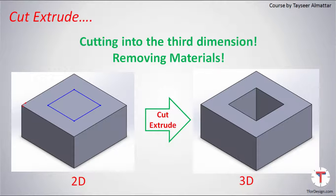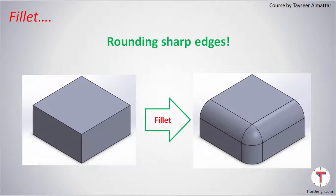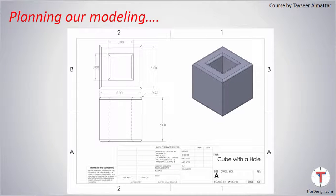Cut Extrude is the opposite of Extrude Boss — here we are cutting into the third dimension by removing material. Using Cut Extrude we can go from the 2D sketch on the left to that hole you see on the right. Fillets are basically rounding sharp edges, so using fillets we can go from the model on the left to the rounded model on the right.